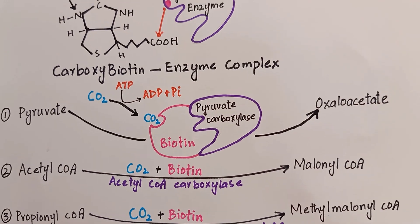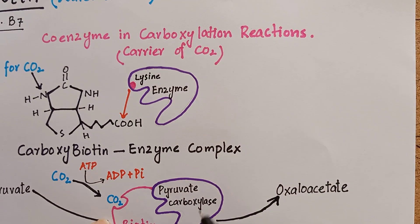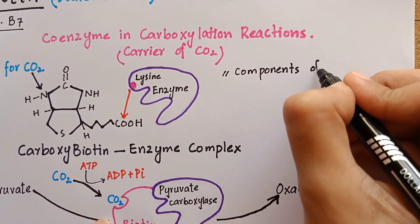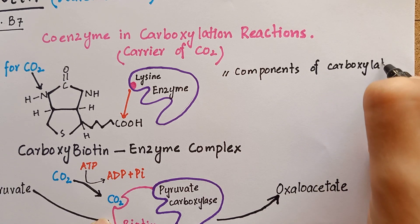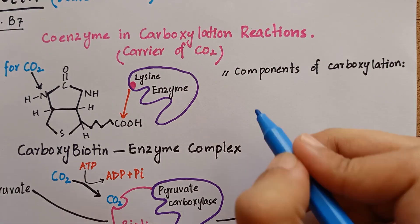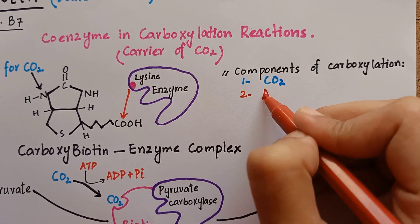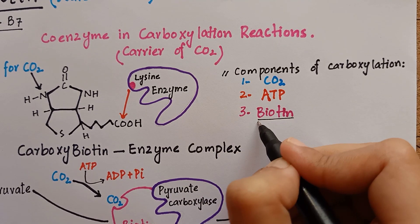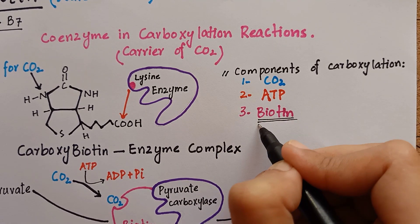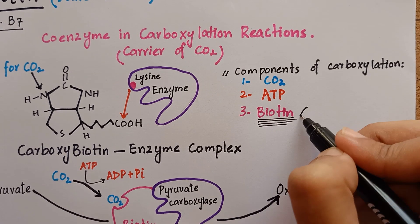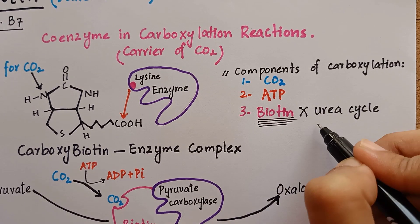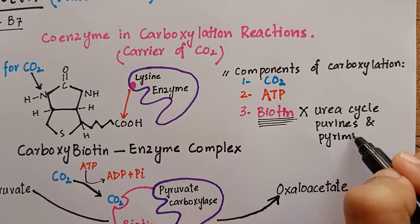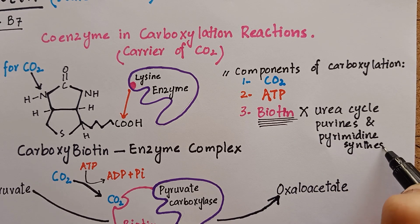There is an interesting point here: it was believed that all carboxylation reactions require three components, which are carbon dioxide, ATP, and biotin. It was later proved that there are some carboxylation reactions which do not require biotin — for example, some specific carboxylation reactions in the urea cycle, purine, and pyrimidine synthesis.